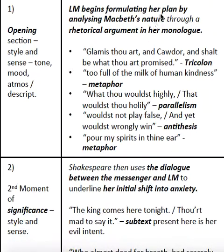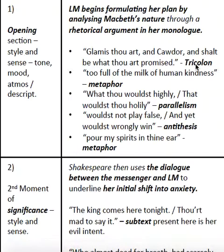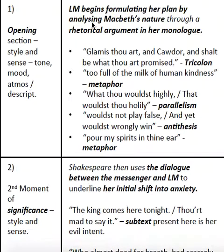So what you've got to do is pick out all the details from this opening section, and then say, ultimately, what are the similarities between all of these details? What are the style features that are distinctive in this opening? Think about it in these terms: What's the tone that it creates? What mood or atmosphere does it create? What is the topic of its description? Here, you've got that combination — Lady Macbeth formulates a plan by analysing Macbeth's nature is the meaning, and then the style element is through a rhetorical argument in her monologue.